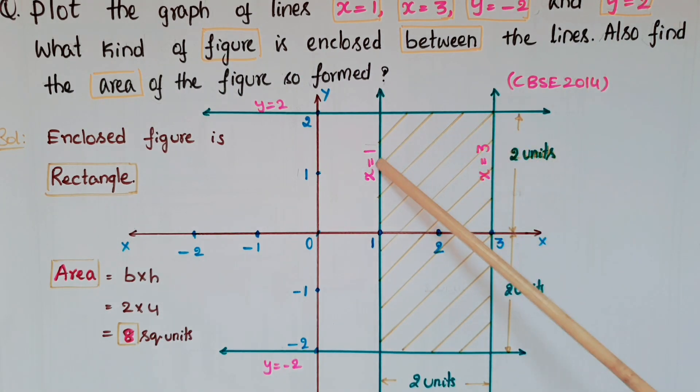So now see, this is x=1 and this is x=3, and this is y=2 and this is y=-2. The figure enclosed between these four lines is a rectangle. See, this shaded portion is the figure enclosed between the lines.